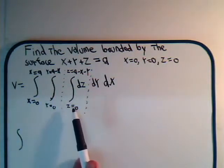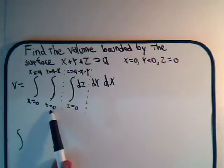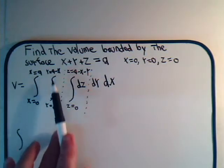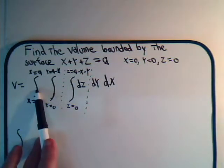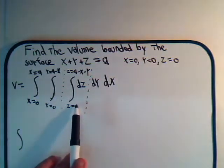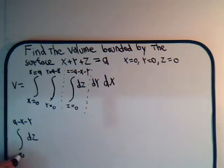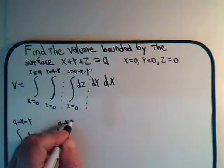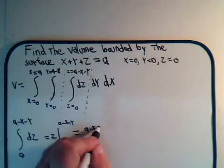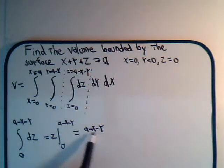I always like to write it saying z goes from where to where, to remind ourselves that this is the z integral, and likewise y goes from where to what point to remind ourselves this is the y integral, and same thing when we're evaluating with respect to x. Let's take this integral out: z goes from 0 to a minus x minus y, dz. Pretty simple, this is going to be z, which equals a minus x minus y. That's what that integral came out to be once we did the integration and applied the limits.